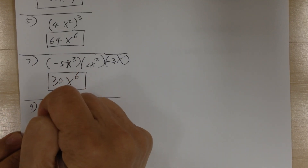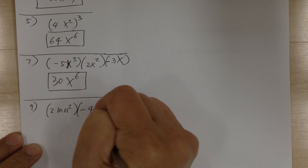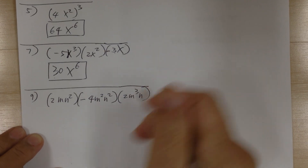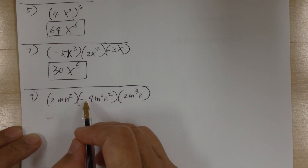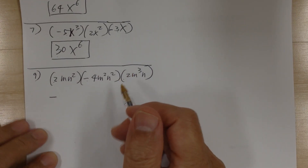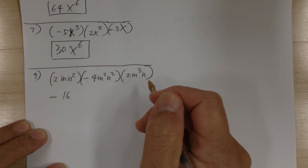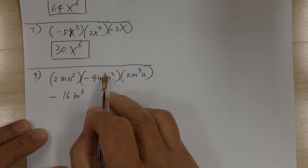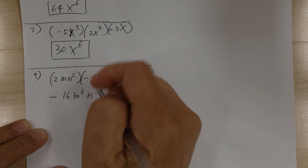Number 9. You have 2mn squared times negative 4m squared n squared times 2m to the 3rd n. First take care of the sign: positive, negative, positive gives you negative. An odd number of negatives gives you negative. Then the number: 2 times 4 is 8, times 2 is 16. Go down the alphabet: m to the 1, m to the 2, m to the 3 — so m to the 6 (1 plus 2 plus 3). Then n: 2 plus 2 is 4, plus 1 is 5, so n to the 5.